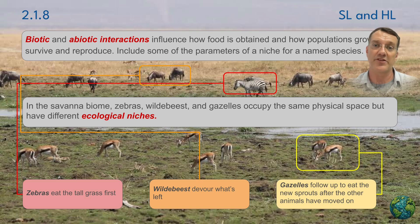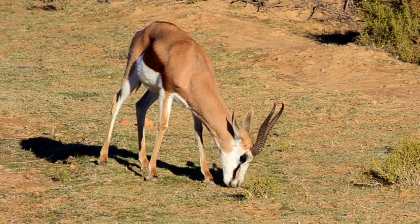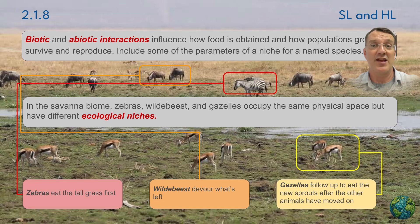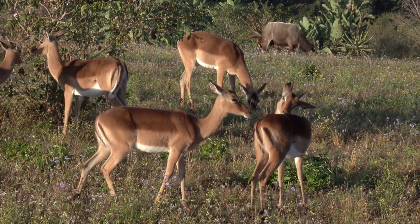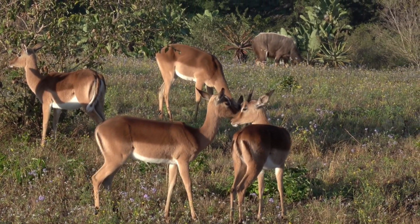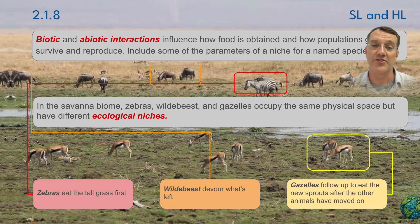The wildebeest eat those grass remnants all the way down essentially to the roots, but the roots have stored carbohydrates and are able to sprout new grasses — and the gazelles love those new grass sprouts. So after the wildebeest have grazed everything down and the grasses have re-sprouted, the gazelles come in. The same area can therefore support three different species of herbivores because they all occupy different ecological niches.